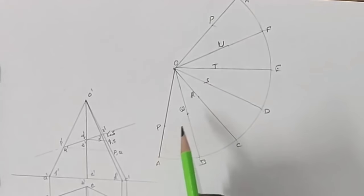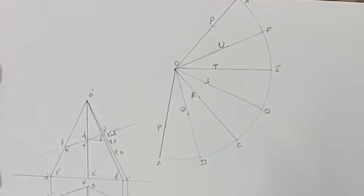So we got all the points P, Q, R, S, T, U, again P. Now we have to connect all the points using straight lines.